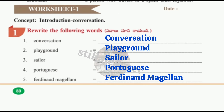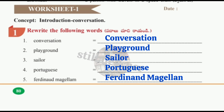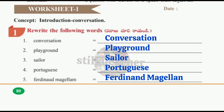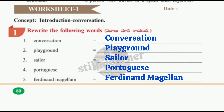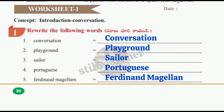Worksheet number one, Roman numeral one: rewrite the following words, starting each with a capital letter. The five words are: Conversation, Playground, Sailor, Portuguese, and Ferdinand Magellan. Be careful to spell Magellan correctly — the last letter of 'Ferdinand' is D, and in 'Magellan' N is the last letter.